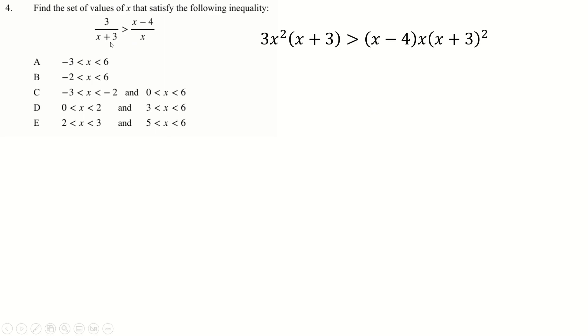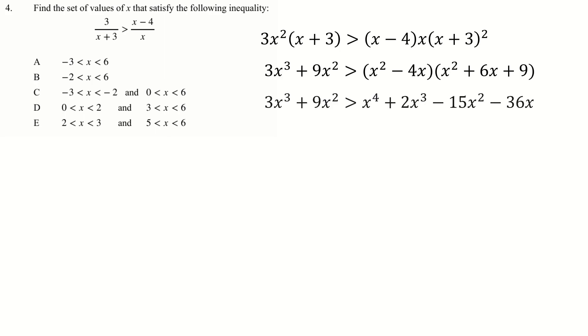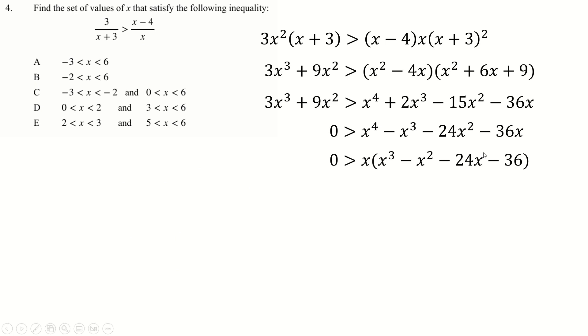Very similar here — can't multiply by x, can't multiply by (x + 3), but I am allowed to multiply by x² and (x + 3)². It ends up making a somewhat unwieldy equation, but it does make the inequality hold, which is all that matters. There's an x everywhere in here so I can factorize that out and just leave a cubic, and then I need to use the factor theorem to solve it.